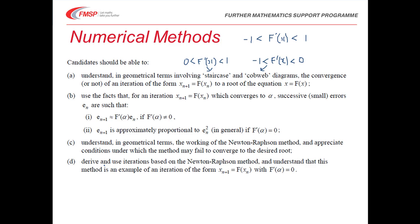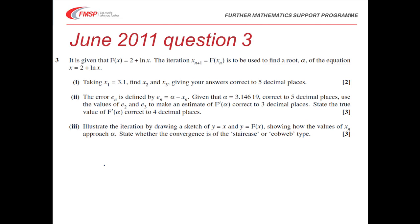We'll have a look at a couple of exam questions now. This question is about the iterative method. We're given a function F(x) = 2 + log x, and we're asked to use the iterative formula X_{n+1} = F(X_n). Taking X1 to be 3.1, we've got to find the next two values, giving our answers correct to five decimal places. And we've got a little bit of work in part 2 about errors — we're given the true value of alpha, and we've got to use that and our answers to part 1 to make an estimate for F'(α) correct to three decimal places.